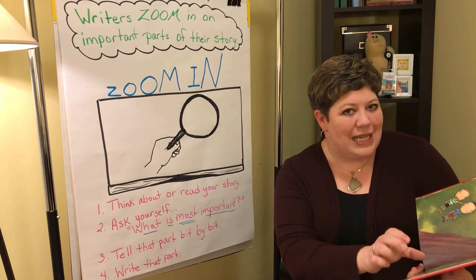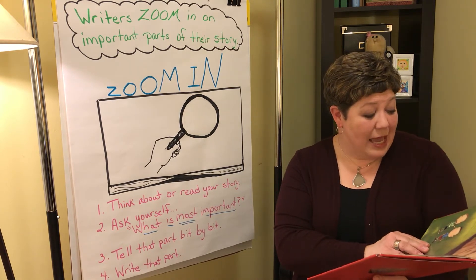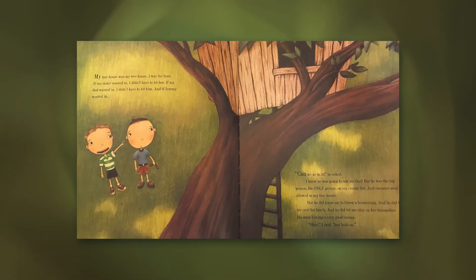Derek Munson zoomed in on this moment and shared how the boy was thinking in his head: 'My tree house was my tree house. I was the boss. If my sister wanted in, I didn't have to let her in. If my dad wanted in, I didn't have to let him in. And if Jeremy wanted in — can we go in it? Jeremy asked. I knew he was going to ask me that, but he was the top person, the only person on my enemy list, and enemies aren't allowed in my tree house.'